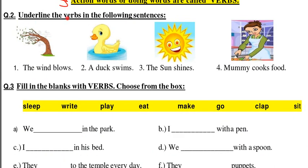Now we will come to Question 2: underline the verbs in the following sentences. First is 'The wind blows.' In this, 'blows' is the verb because blows is an action. Let me underline 'blows.' Then we have 'A duck swims.'